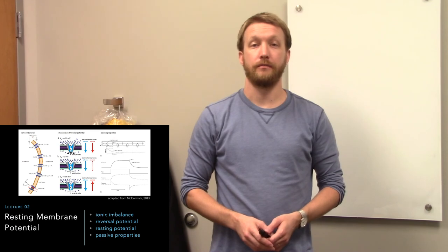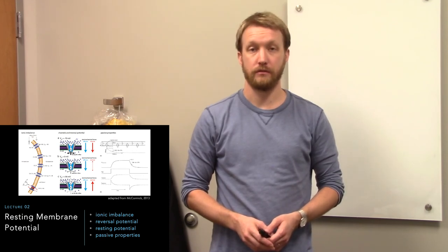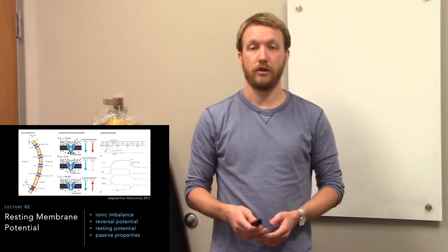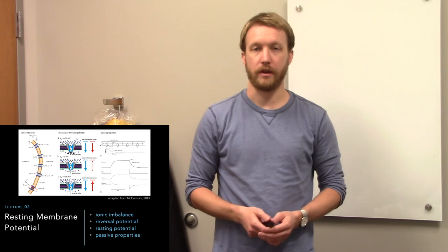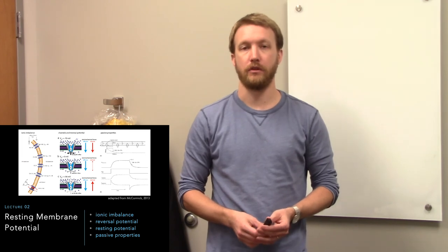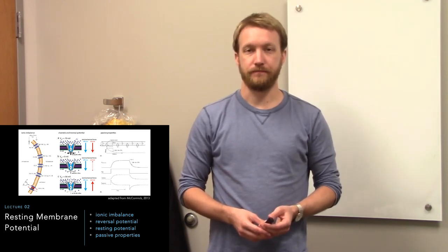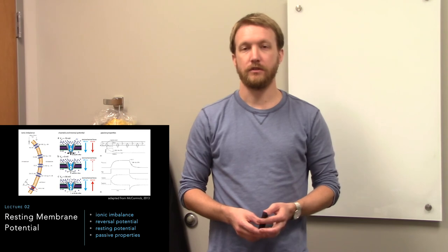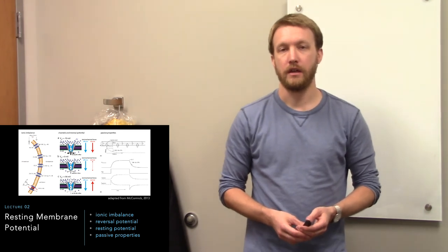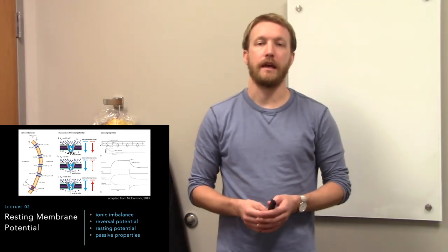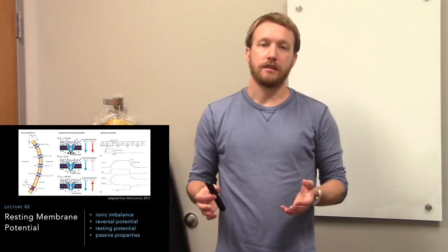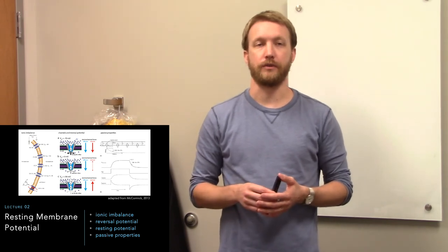This lecture is about the resting membrane potential of neurons. We call it the resting membrane potential because it's the charge or the potential across the membrane when the neuron is resting — that is, not actively conducting an action potential or receiving synaptic input. This is kind of an impossible scenario for a neuron, but you can create this in the lab and measure it. It just doesn't exist for very long, if at all, in real life.